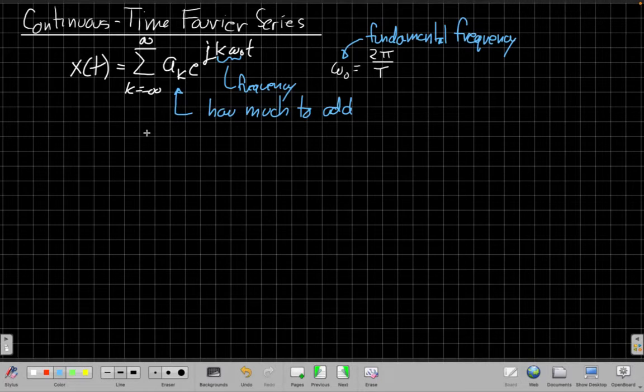The other natural question is, well, where do the a sub k's come from? If I have a signal x of t, how do I take it apart into its recipe? And luckily there's a deterministic equation for that. You don't need a mathematical palette to taste it and guess how much of each frequency there is. We can just follow an equation. And that's called the continuous time Fourier series analysis equation.